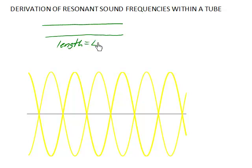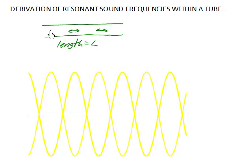So let's say we have a tube, and we're going to call the length capital L. One thing to keep in mind is that sound is a longitudinal wave. So the air molecules within the tube, everywhere along the tube, are vibrating left and right here in the diagram.